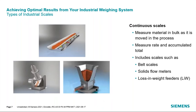The last type of industrial scale is the continuous scale. Continuous scales measure bulk material as it's moved in the process. One thing that makes continuous scales different is they have two measurements: rate — how many pounds per hour or tons per hour are moving at this particular moment — and an accumulated total — how many tons or pounds of product have been transferred since the last time the totalizer was reset.